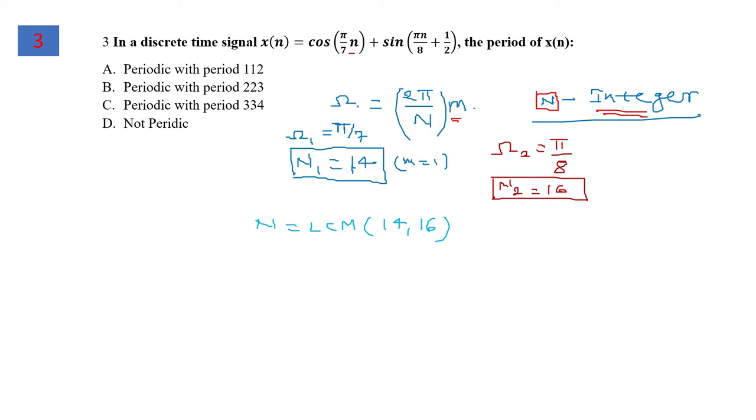In the first part, omega equals π/7, so N1 comes out to be 14 sequences. For the second part, omega 2 equals π/8, so N2 equals 16.